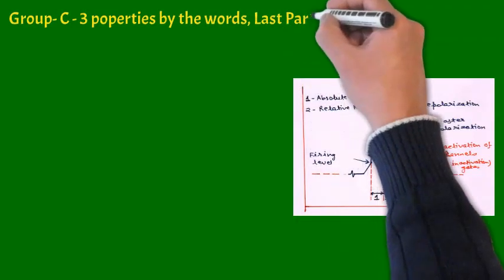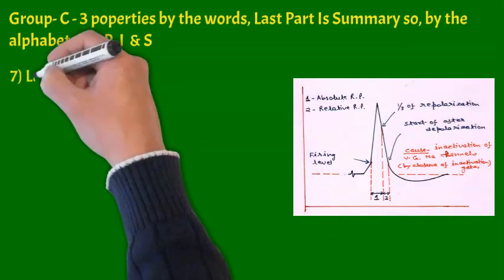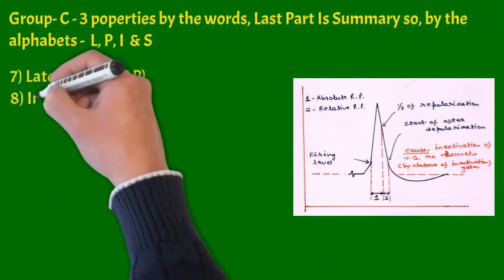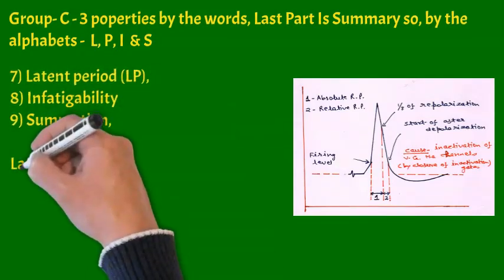Let us take Group C now. Three properties by a small line. Last part is summary. This means alphabet L-P-I-N-S. From L, latent period. From I, infatigability. And from S, summation.